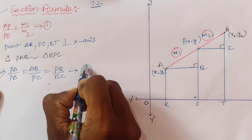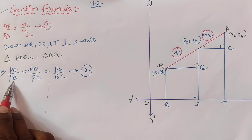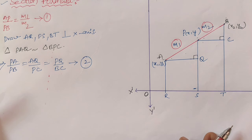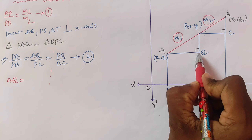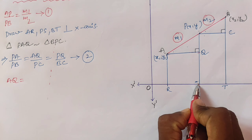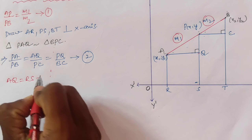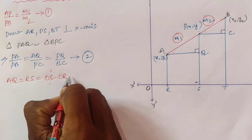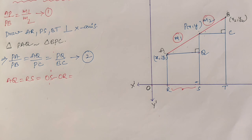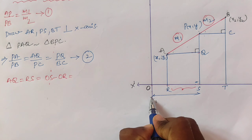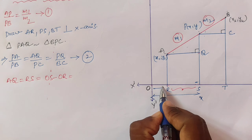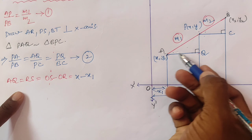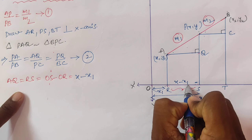In similar triangles, corresponding sides are in proportion. So PA by PB equals AQ by PC equals PQ by BC — this is equation number two. We already know PA and PB are m1 and m2. Now we find AQ: AQ equals RS, and RS equals OS minus OR, which gives x minus x1. So AQ equals x minus x1.